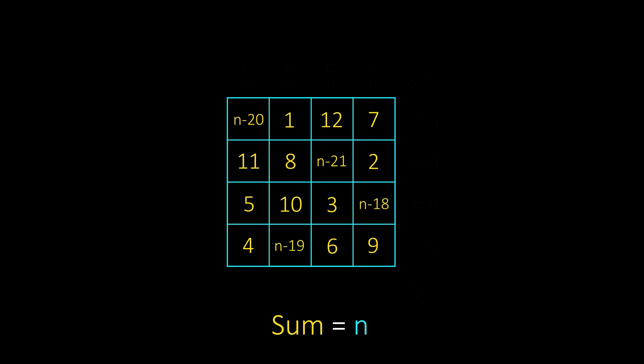And that's the magic square. If you replace n by any number, you get your magic square whose sum is equal to n. For example, this is the magic square for n equal to 27.